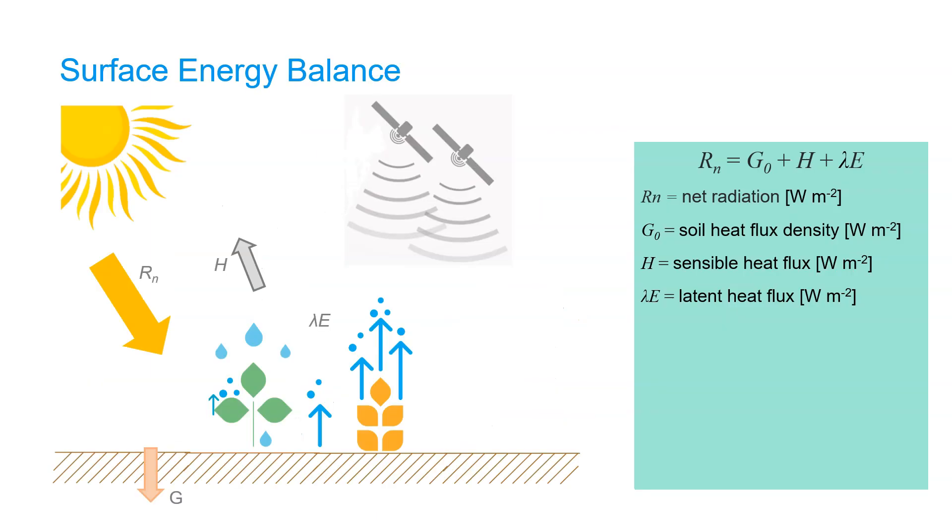Now let's go from the earth system to a parcel and have a look at the surface energy balance. There, the net incoming radiation is separated into the soil heat flux, sensible heat flux, and the latent heat flux. Again, the soil heat flux is there to heat up the soil, the sensible heat flux to heat up the air, and the latent heat flux is for evapotranspiration.